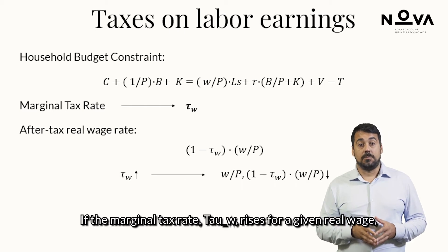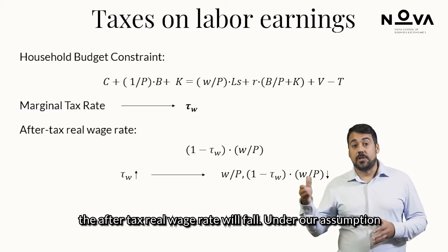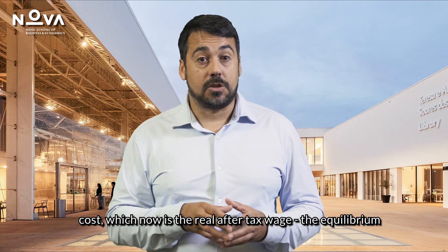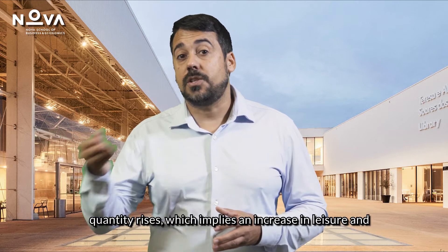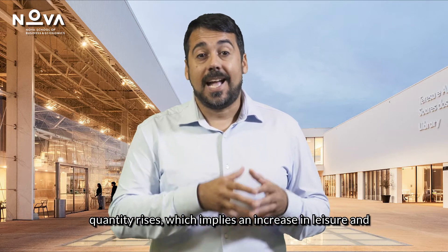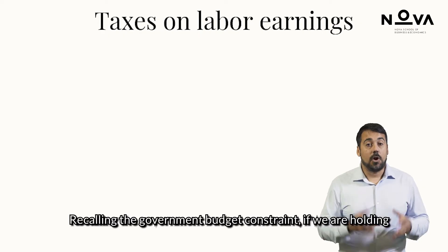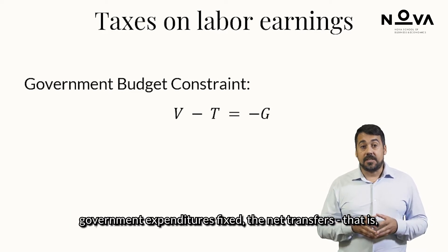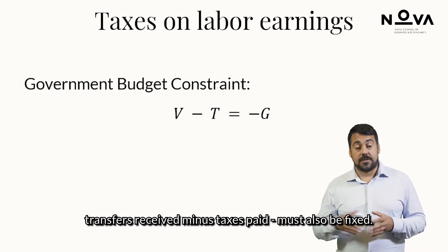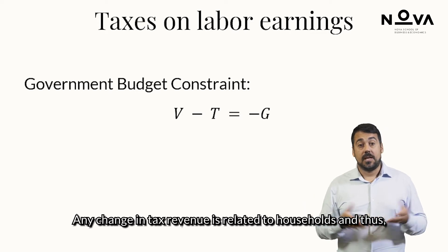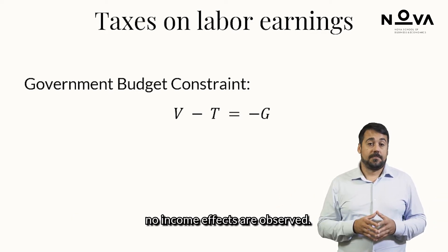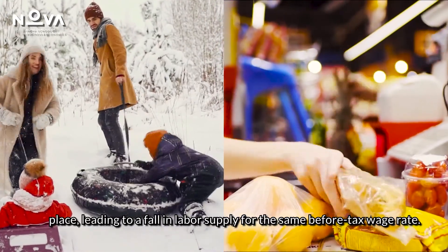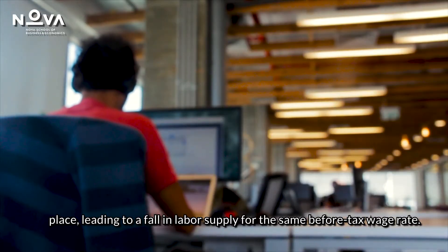If the marginal tax rate τ_w rises for a given real wage, the after-tax real wage rate will fall. Under our assumption that leisure is a normal good, if its price — which is now the real after-tax wage — falls, the equilibrium quantity of leisure rises, implying an increase in leisure and a fall in labour supply and consumption. Holding government expenditures fixed, net transfers must remain fixed, so any change in tax revenue is rebated to households and no income effects are observed. Therefore, only the substitution effect between leisure and consumption takes place, leading to a fall in labour supply for the same before-tax wage.